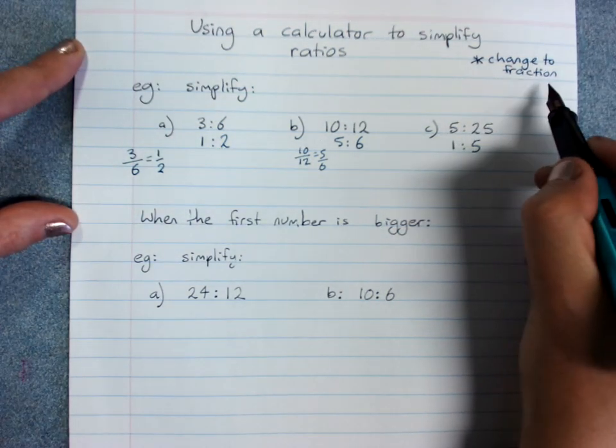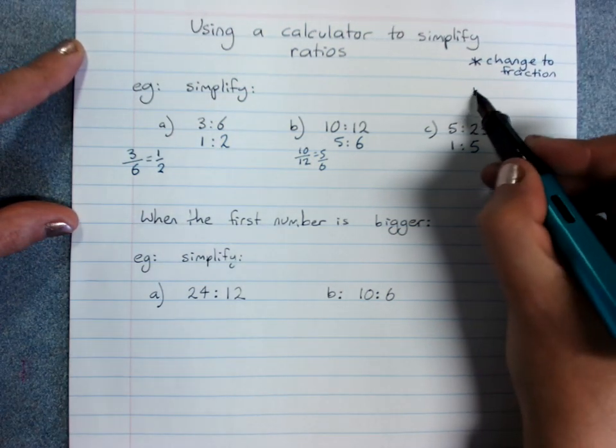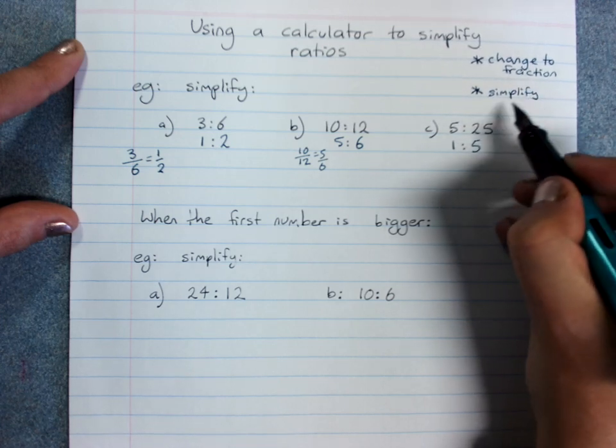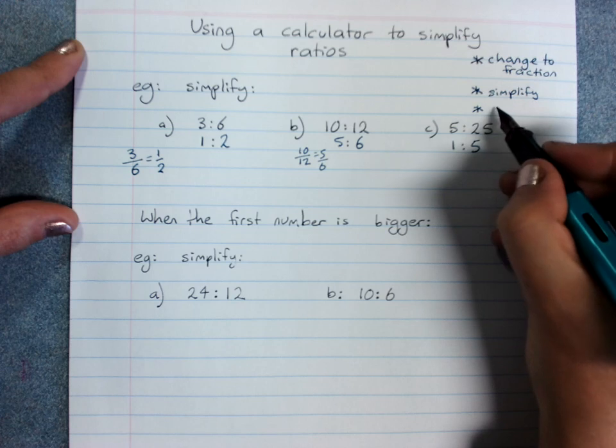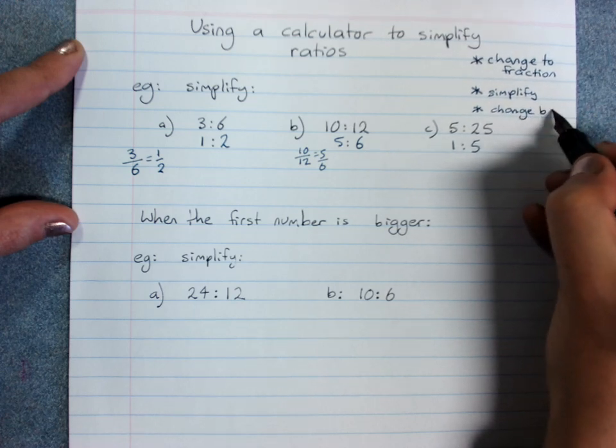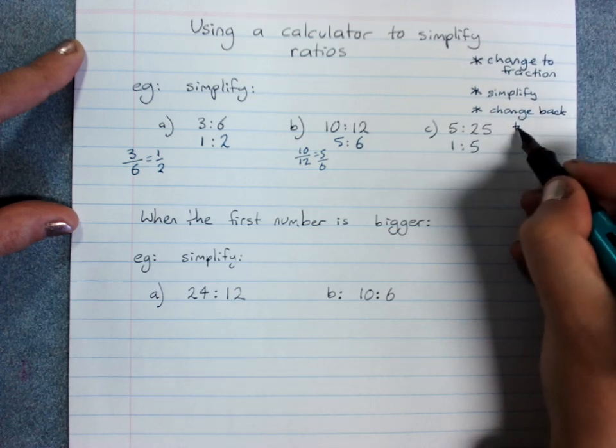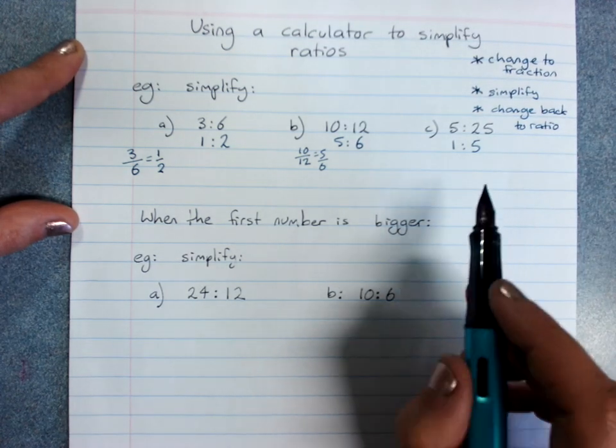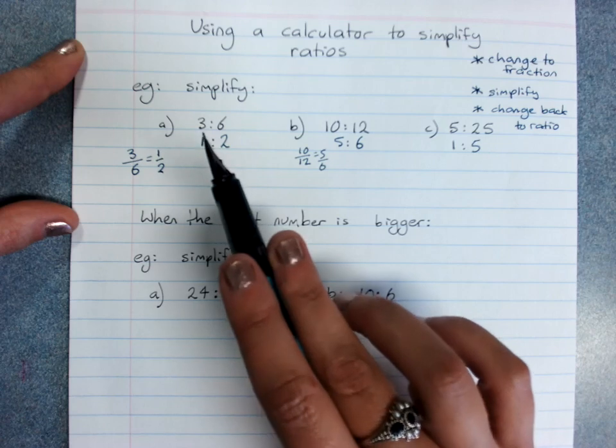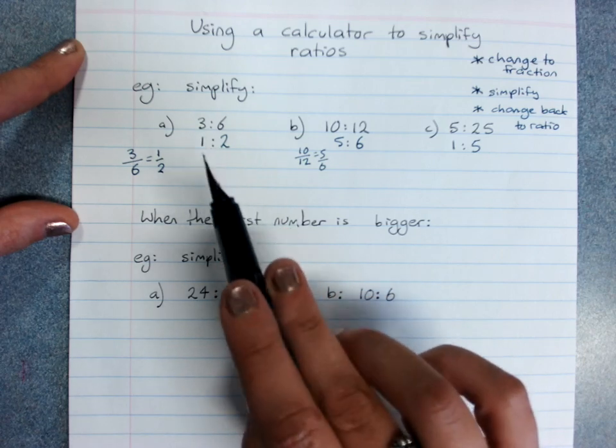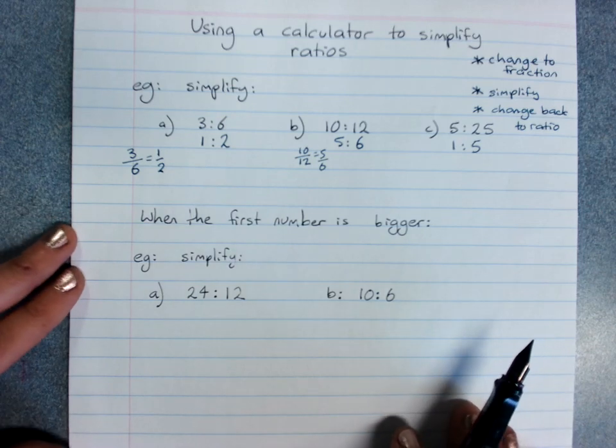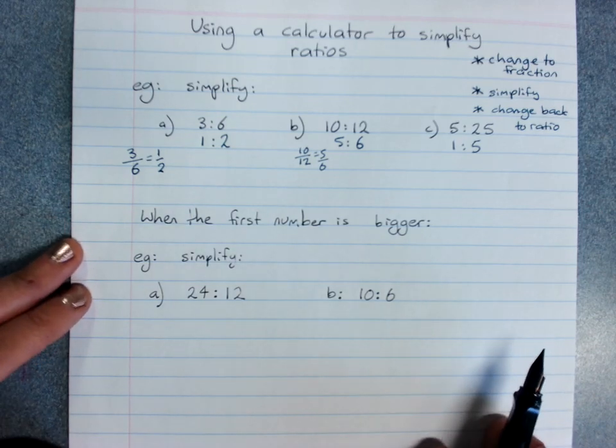So you change it to a fraction, you simplify on the calculator and change it back to a ratio. Now it only works if the first number is smaller. If the first number is bigger, you might have to be a little bit tricky.